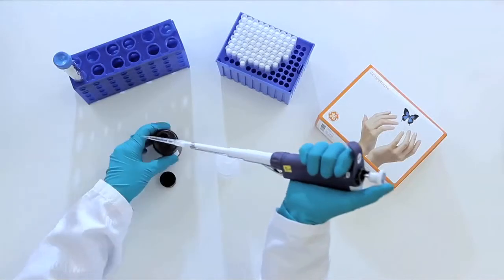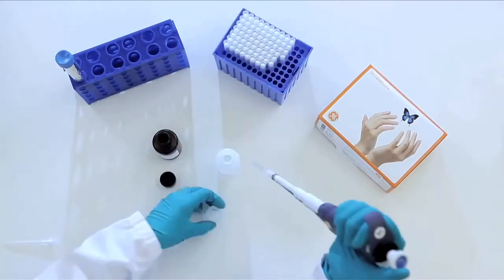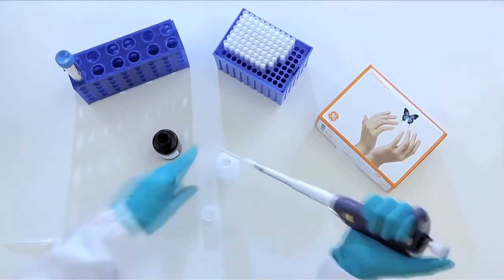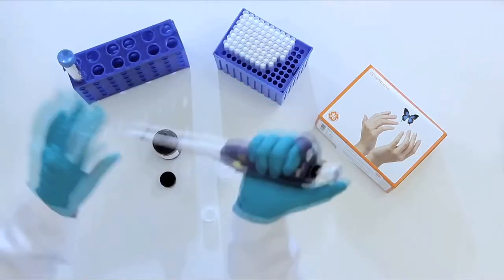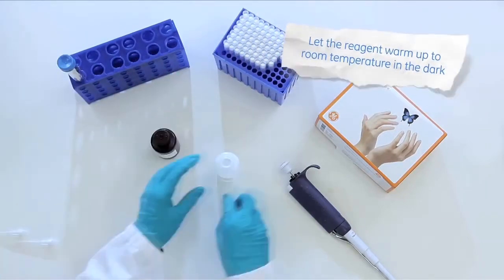ECL Prime Reagent is the ideal choice for detection in western blotting. It works well with all detection methods. Prepare ECL Prime according to the instructions. Allow it to warm up to room temperature in the dark.